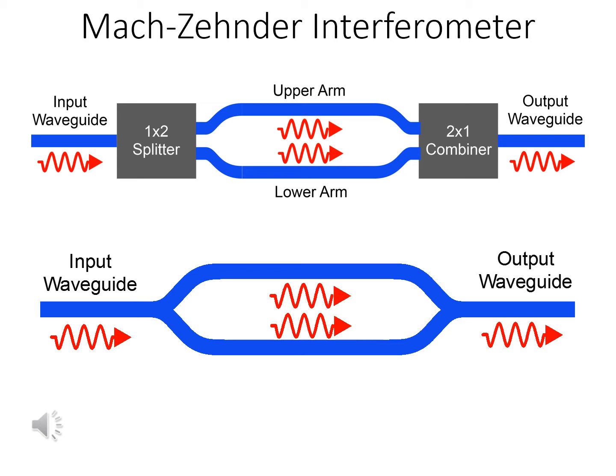A simple optical splitter and combiner can be created with what are called Y-junctions, as shown in the lower drawing. At this point, one might ask, since light just goes in and then comes back out, what good is this device?